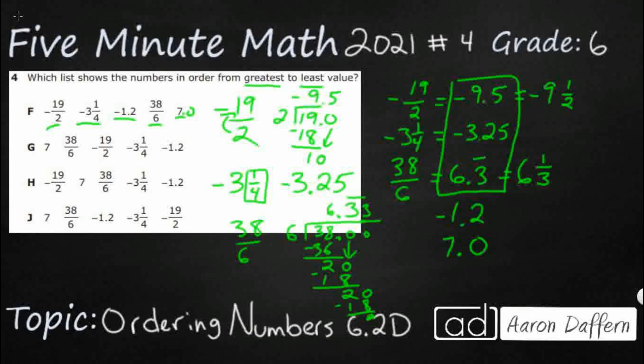Now, look at our greatest. We've got two that are not negative. We've got the 6.3 and we've got the 7. Those two are going to be our greatest. So, 7 first.